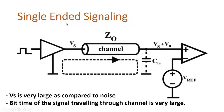Bit time means the amount of time either a zero or a one remains when transmitting a chain of zeros and ones from transmitter to receiver. If the bit time is large, the one or zero remains for more time, so the capacitor gets sufficient time to charge. For example, if transmitting a one, the capacitor gets enough time to charge to the appropriate value so the receiver detects it as a one. Similarly, transmitting a zero gives the capacitor sufficient time to discharge so the receiver detects it as zero.